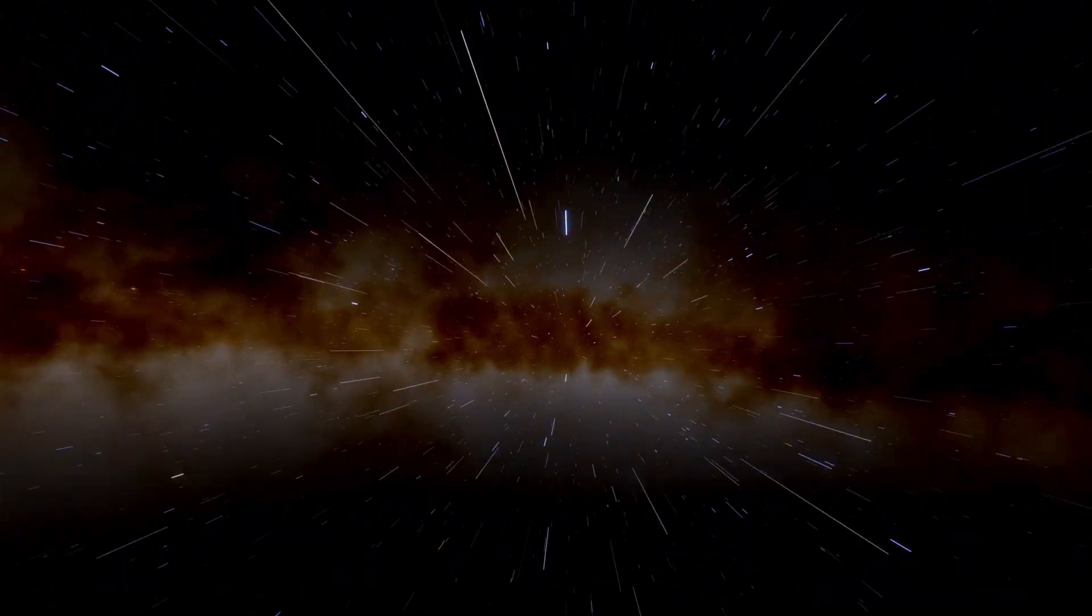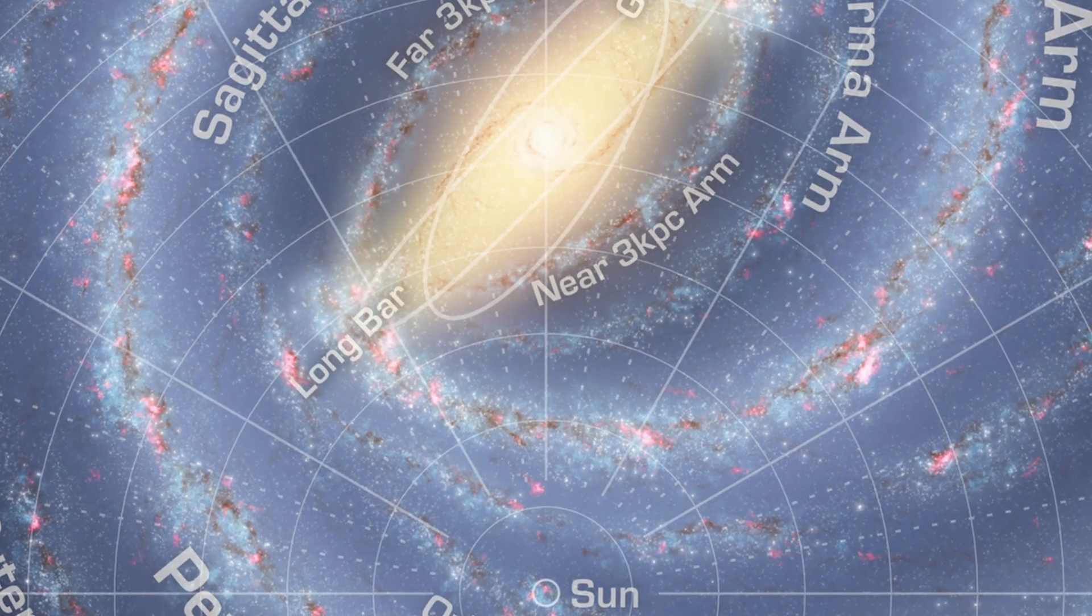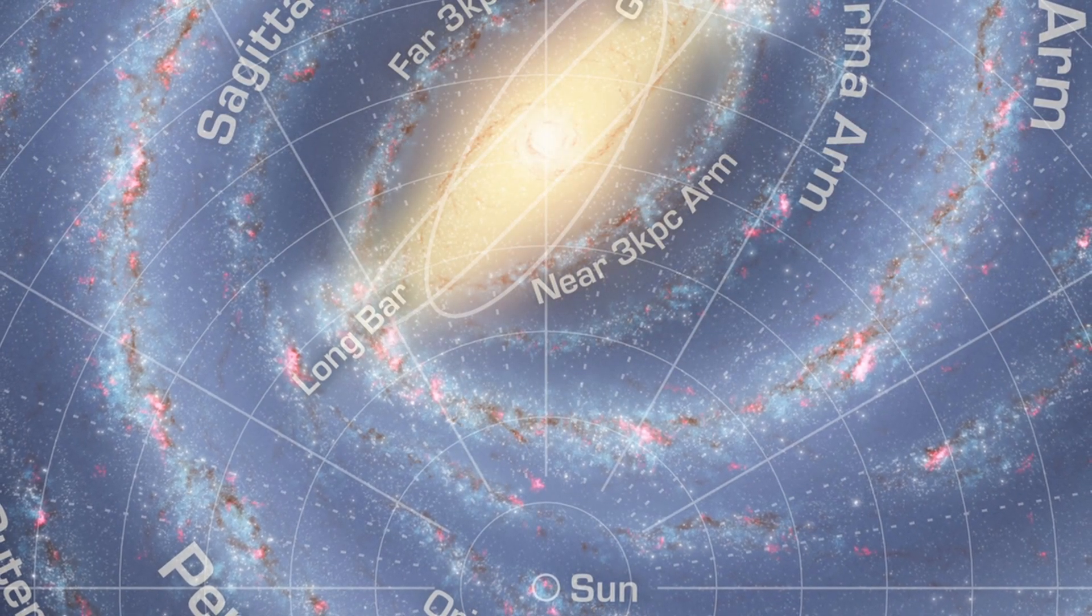And yet, our sun dances elegantly in an almost perfect circular orbit, avoiding an elliptical one that would have it periodically crossing the spiral arms over time.